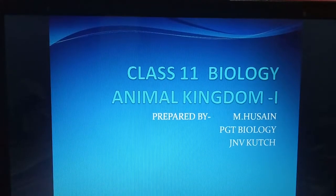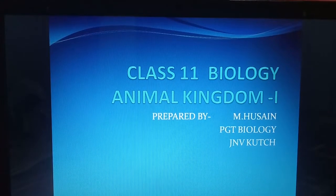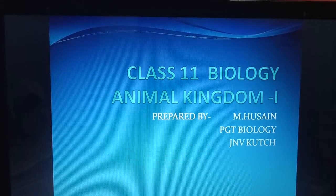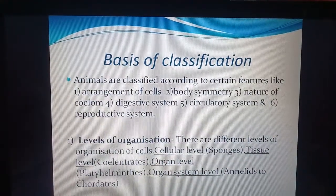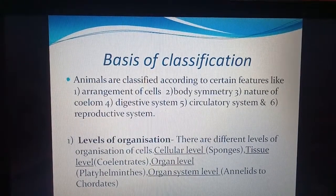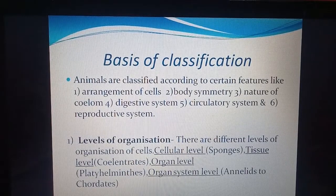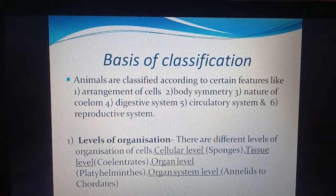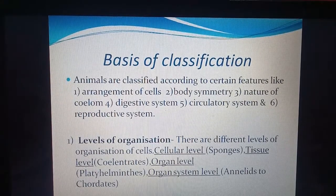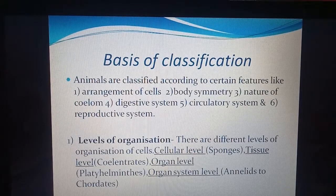Welcome students. Today we will deal with chapter number 4, Animal Kingdom, part 1. In this we will study about the basis of classification of animals. We know that there is a diversity of animals on the earth — many varieties compared to plants. Animals are classified according to certain features which may be common between them.